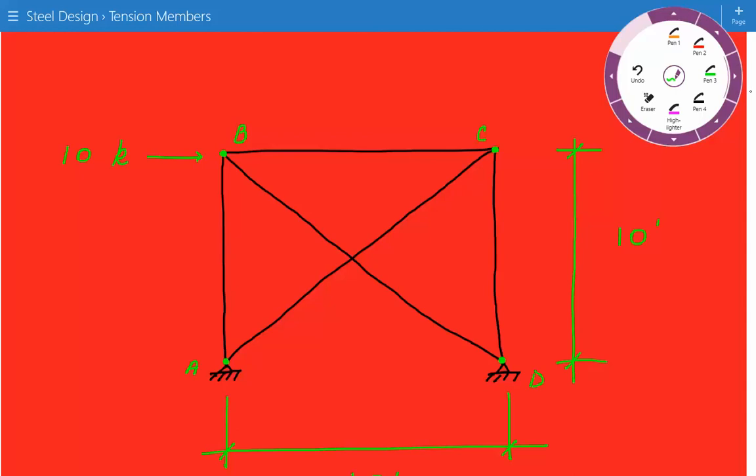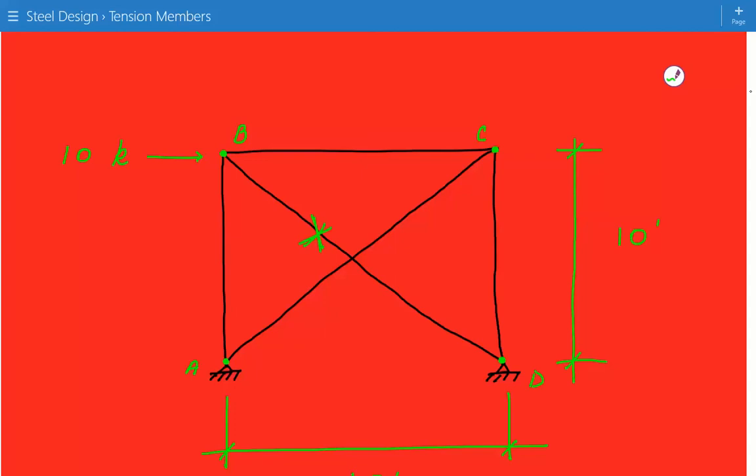So if we look at joint B, we mentioned earlier in the problem statement that member BD and AC, the diagonal braces, don't take any compression. So this means that for this loading scenario, if we have this wind load acting horizontally at joint B, since BD does not take any compression, there won't be any load on BD. It's not taking any load.